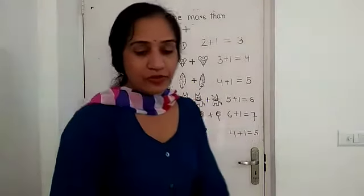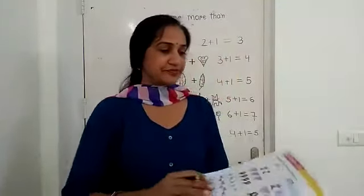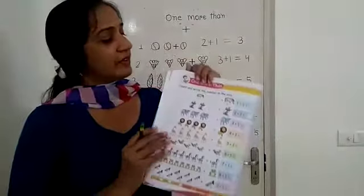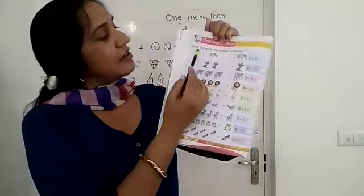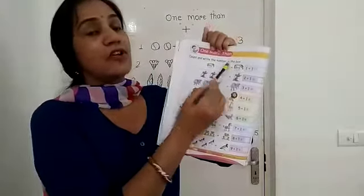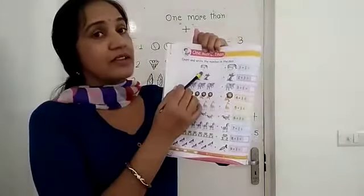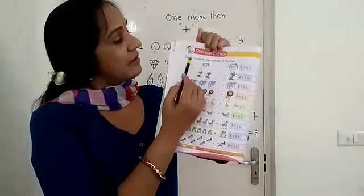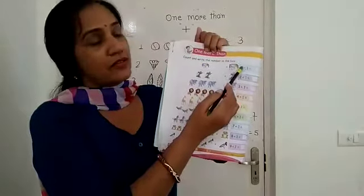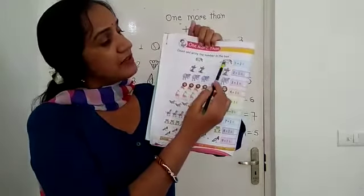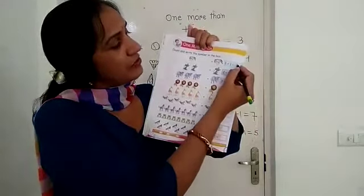Now, open your book at page number 28. One more than. Count and write the number. First of all, you will count the number, then count the picture, then write the number. Count and write the number in the box. Count the picture. One plus one. One plus one, two. Write two.